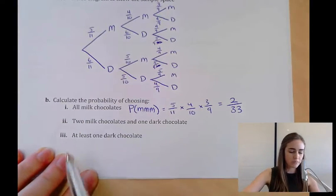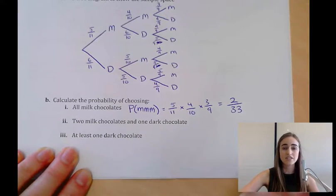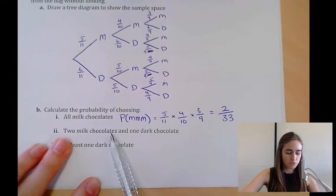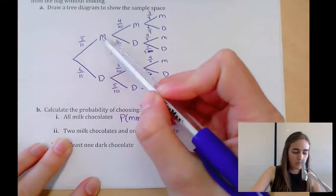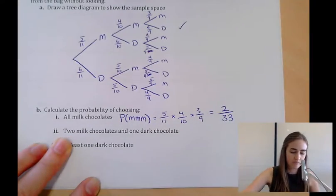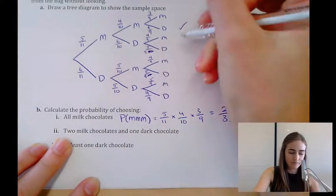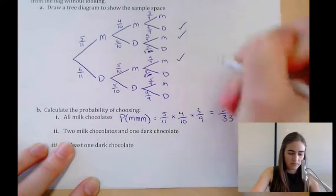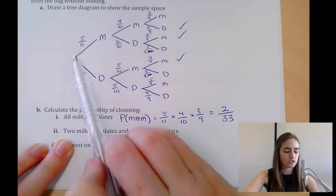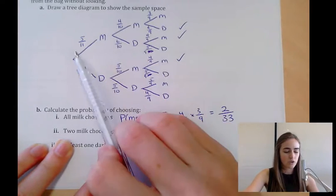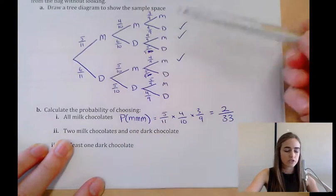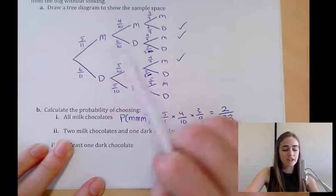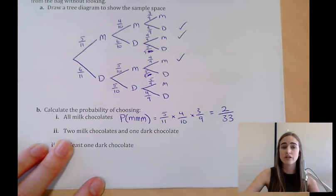Next, calculate the probability of choosing exactly 2 milk chocolates and 1 dark chocolate. A highlighter would be helpful here. There are three ways this can happen: milk-milk-dark, milk-dark-milk, or dark-milk-milk. We need to calculate the probability along each of those three branches and then add them together.